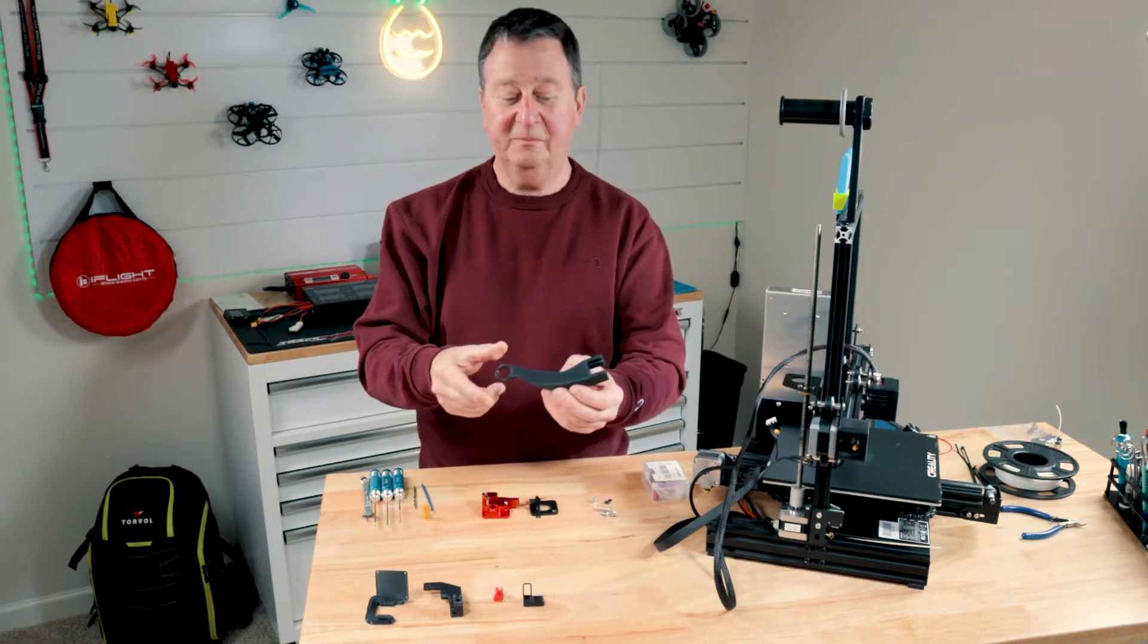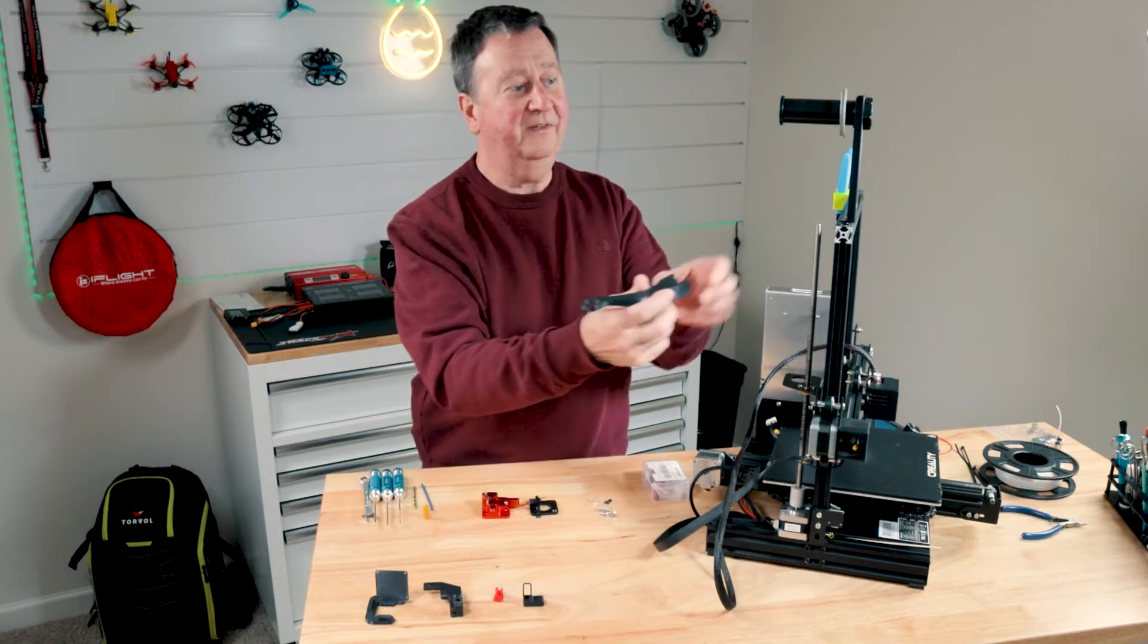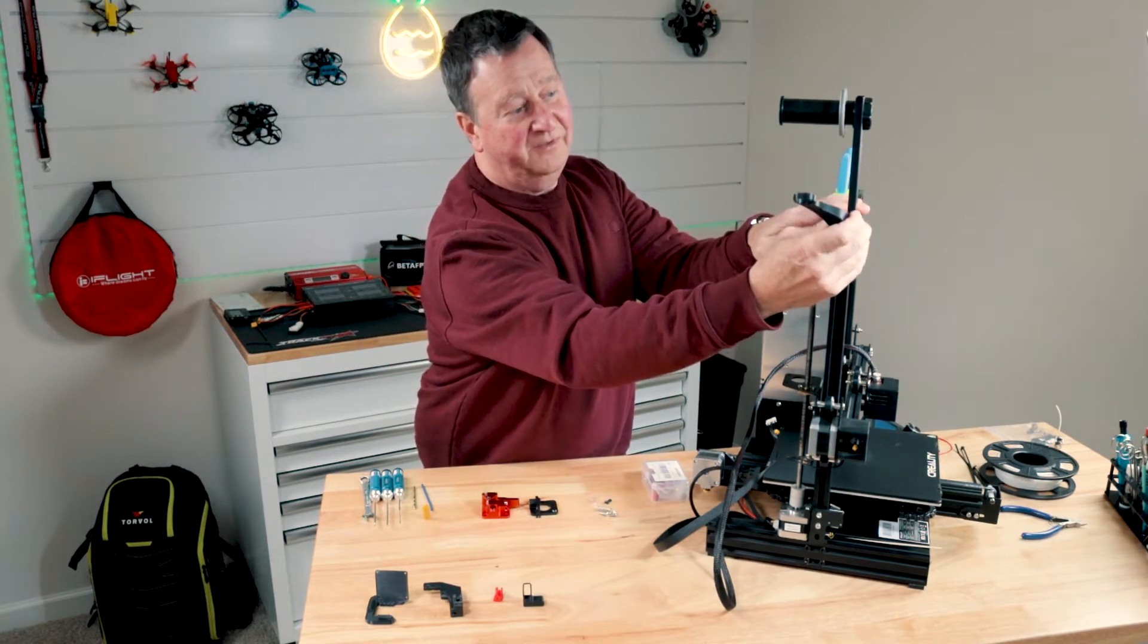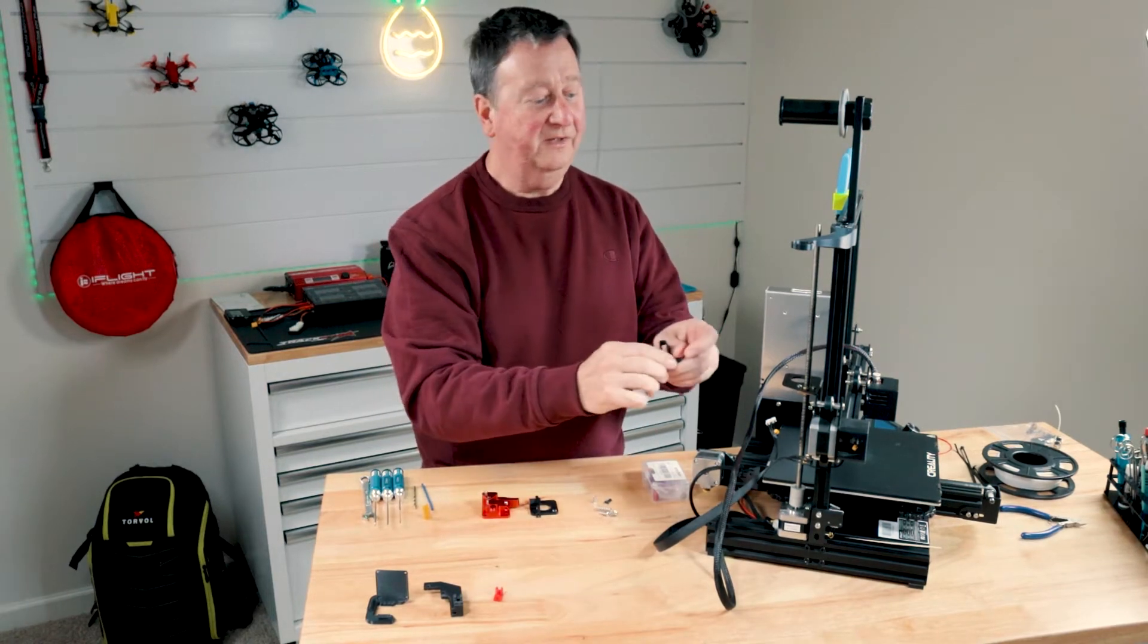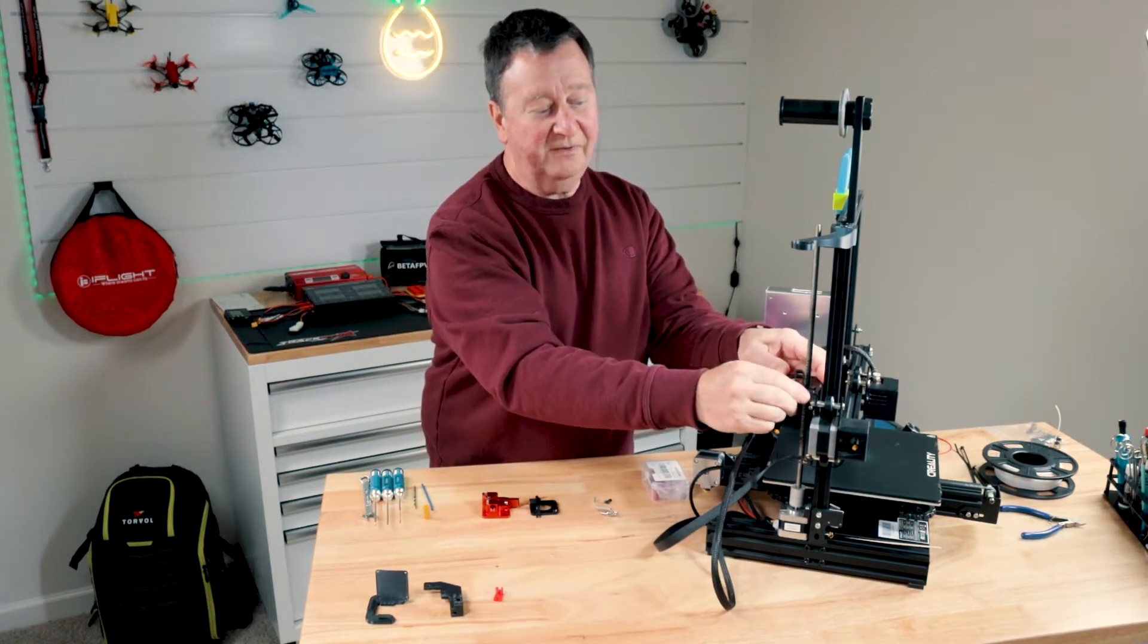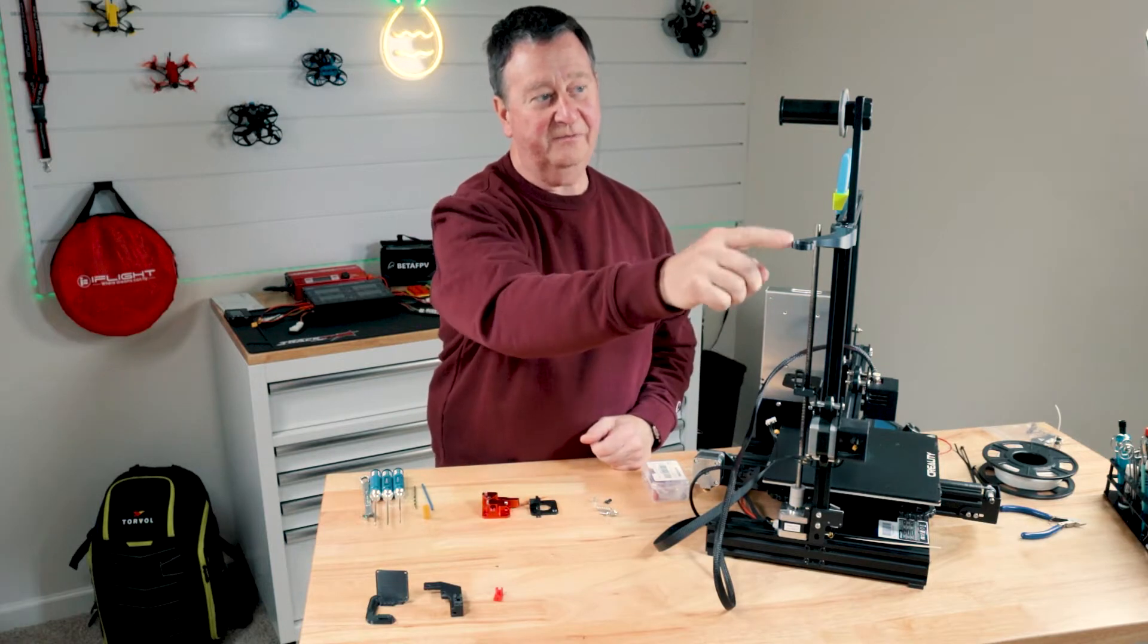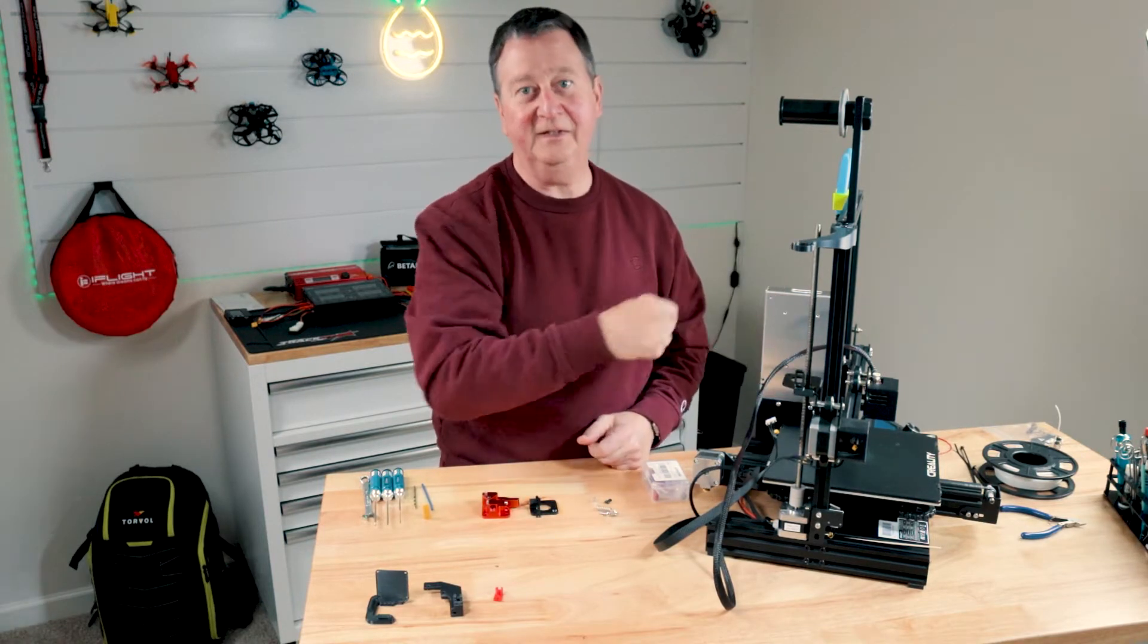The first one's going to be a filament guide support. That's going to slip into the channel here on the side. The second one is the lower guide support that goes onto the extruder mount here, to guide the filament from the reel through and into the extruder.